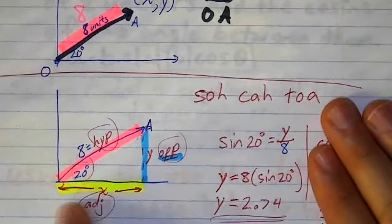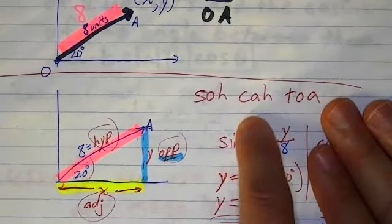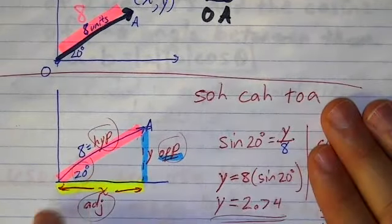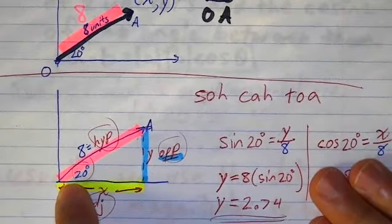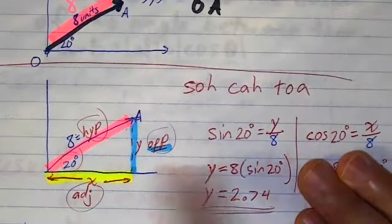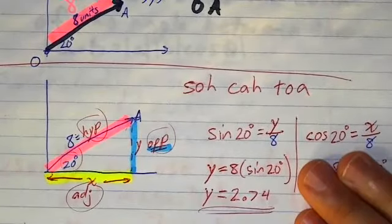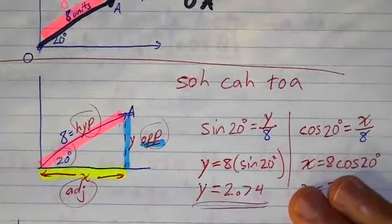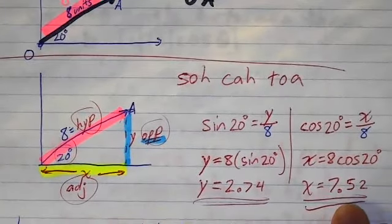Now to find the x value, I have the adjacent and the hypotenuse. I'm going to use cosine. So I could say, cosine of 20 degrees is equal to adjacent over hypotenuse, x over eight. Okay. So multiply both sides by eight, we get this, and then I get the x component is 7.52.